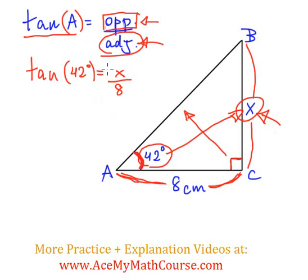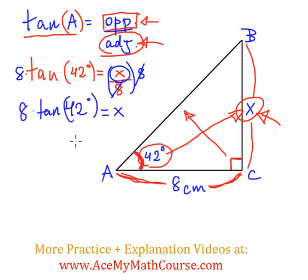Now, let's solve for x. To do that, I will multiply both sides by 8, so I can have the x on its own, since we want to isolate x. So, I have 8 times the tangent of 42 degrees, which is equal to x.